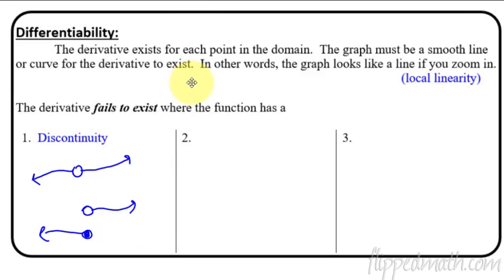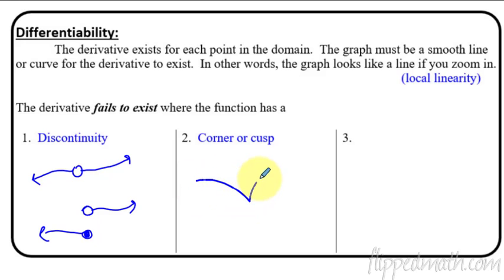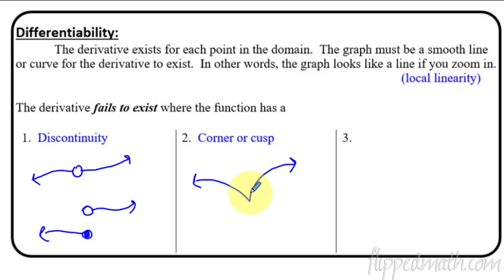The next place where the derivative does not exist is something called a corner or a cusp. For example, if you have a graph that goes off to the left and right and comes together at a sharp point, that's called a cusp. A sharp corner makes the derivative fail to exist because if you zoom in on that point really, really close, it's still going to be a sharp corner — it will never flatten out and have local linearity. Therefore the derivative can't exist.